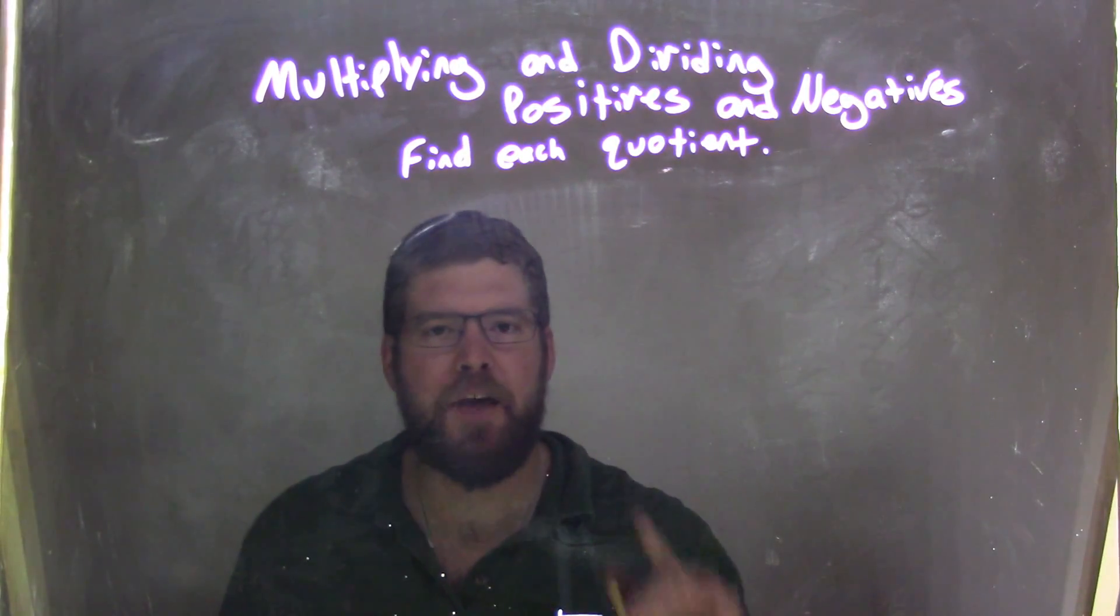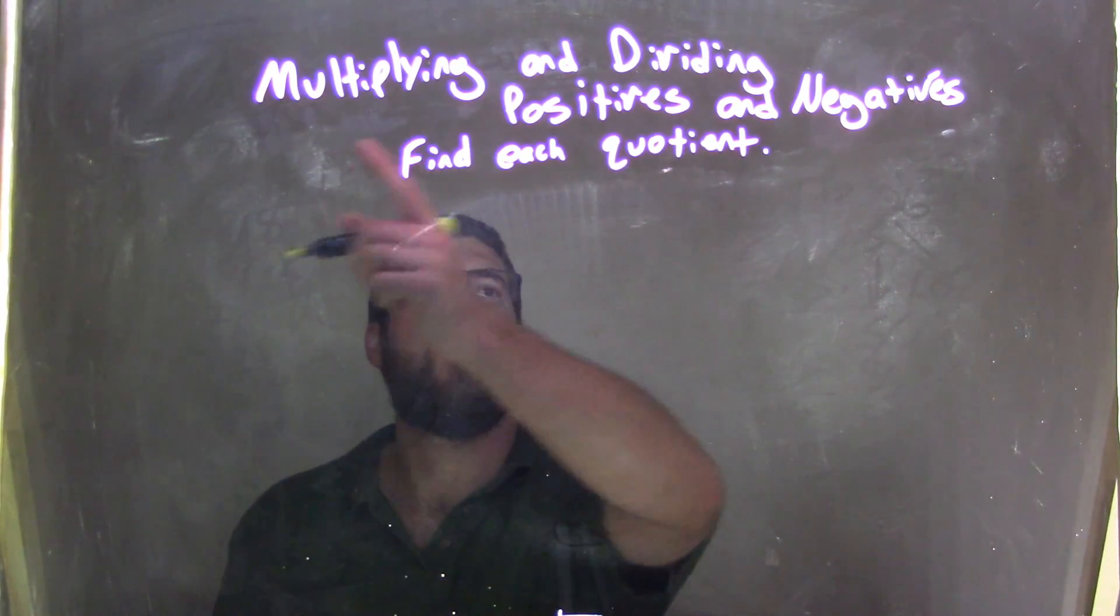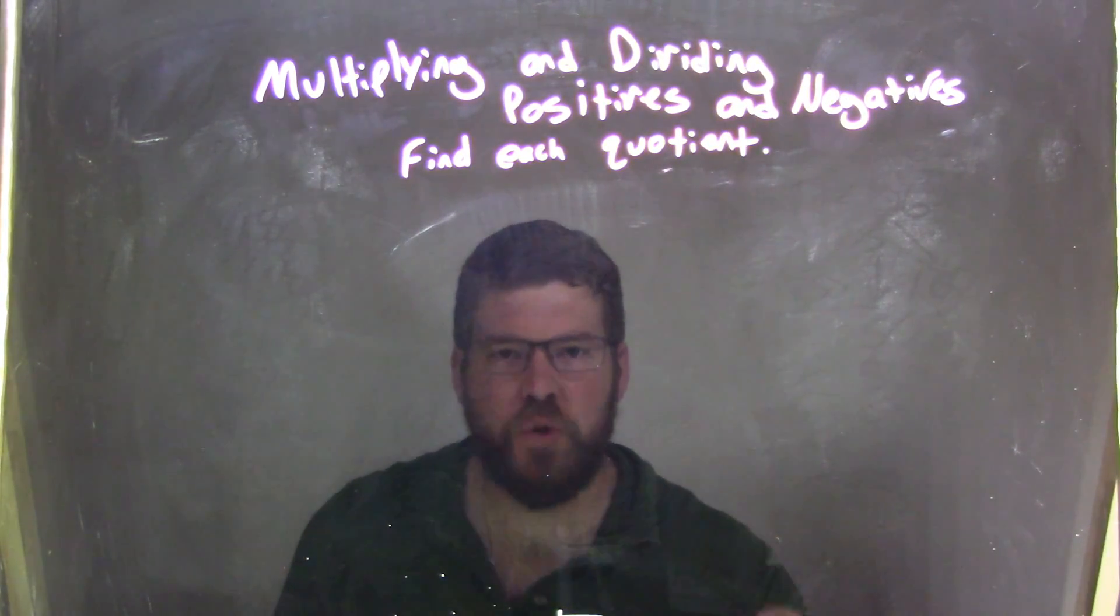Hi, I'm Sean Gannon, and this is Minute Math. Today we're going to learn about multiplying and dividing positive and negatives, and we want to find each quotient.